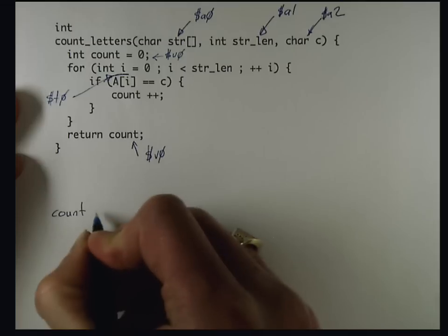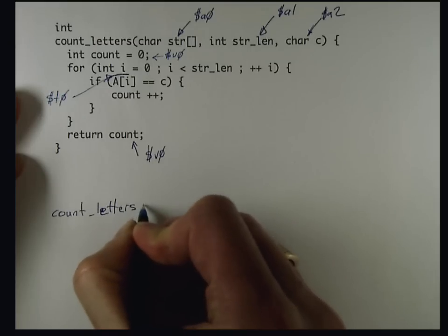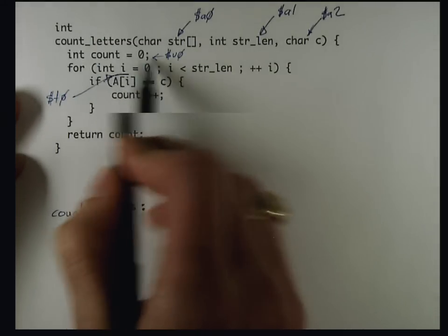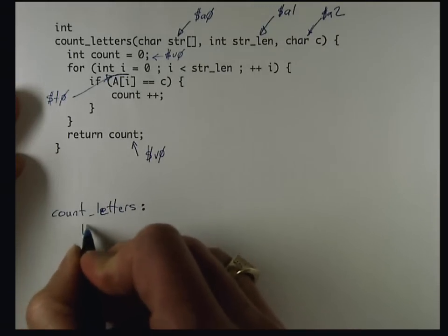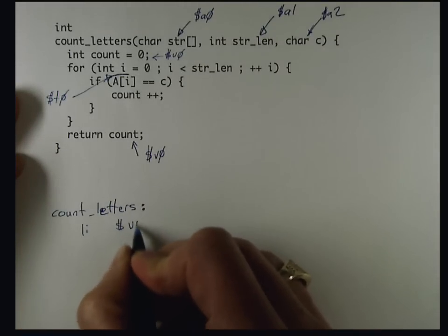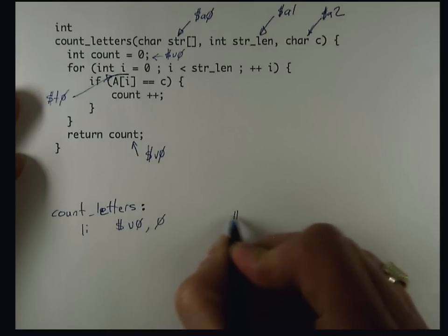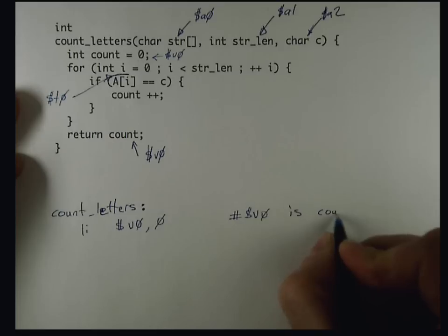I have my initial label for count_letters, which is at the beginning of the function, and the first thing I have to do is initialize this count variable. I'm going to use a load immediate instruction to set V0 to be 0, and again this V0 is the count variable.